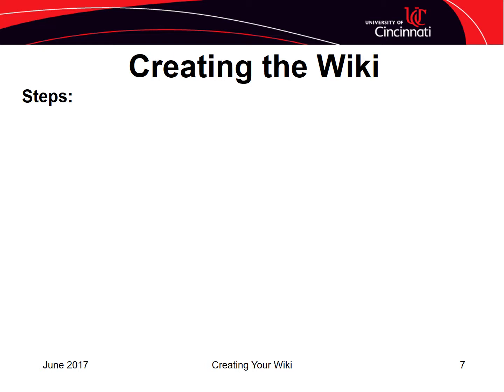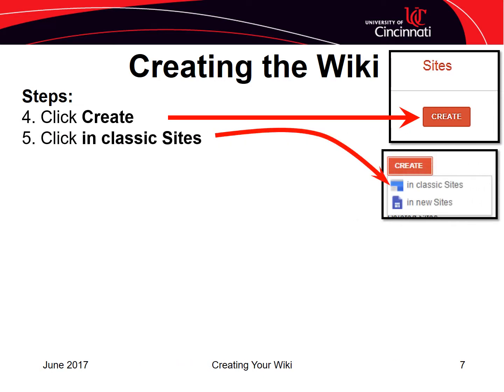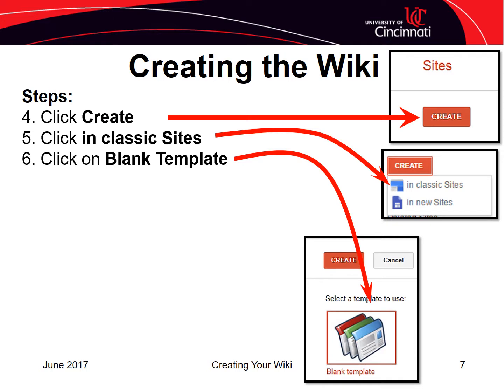Once you've navigated to the Google Sites page, click on the create button, then choose Classic Sites. You will then be given the option to pick a template. In this case, we'll keep it simple and choose the blank template. You are welcome to use another template, but if this is your first time creating a wiki, keep it simple.